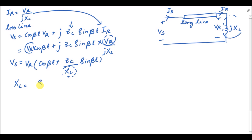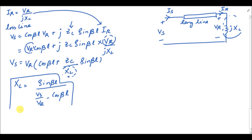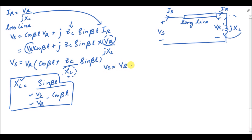Taking XL to the other side of the equality and solving, we get: XL = Zc·sin(βl) / (Vs/Vr − cos(βl)). This is the formula for calculating the reactance value when you have an overvoltage problem at the end of the transmission line. You put the sending-end voltage for Vs and the receiving-end voltage value you want to maintain for Vr.